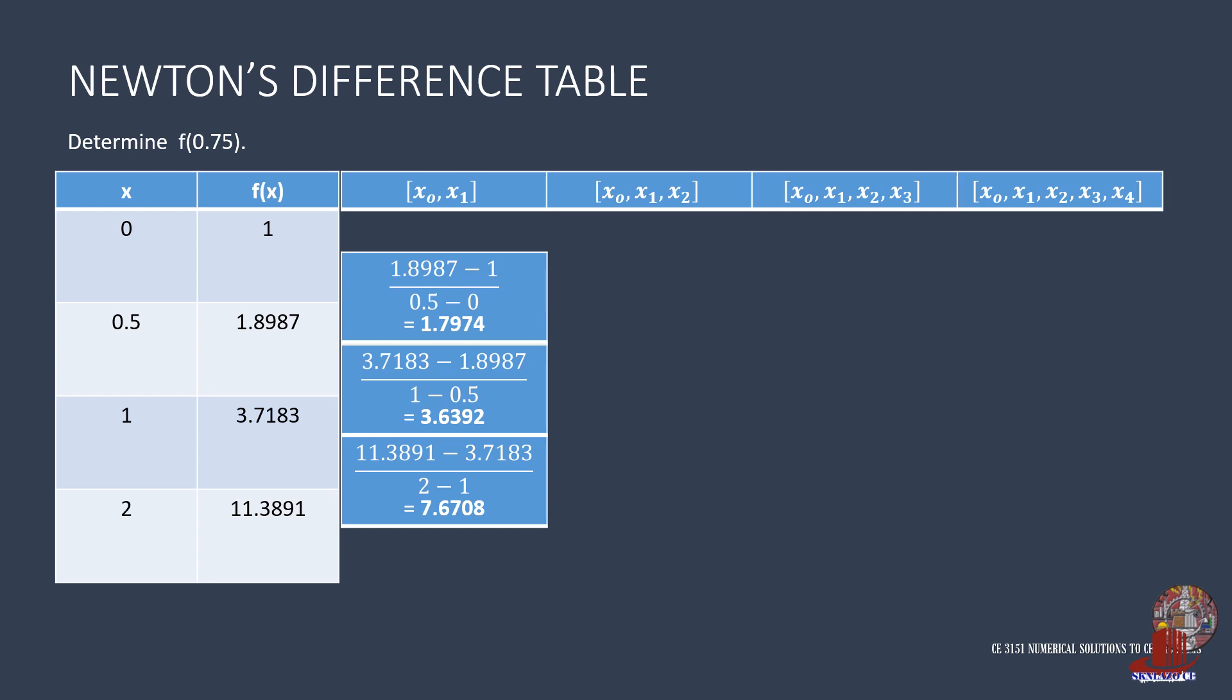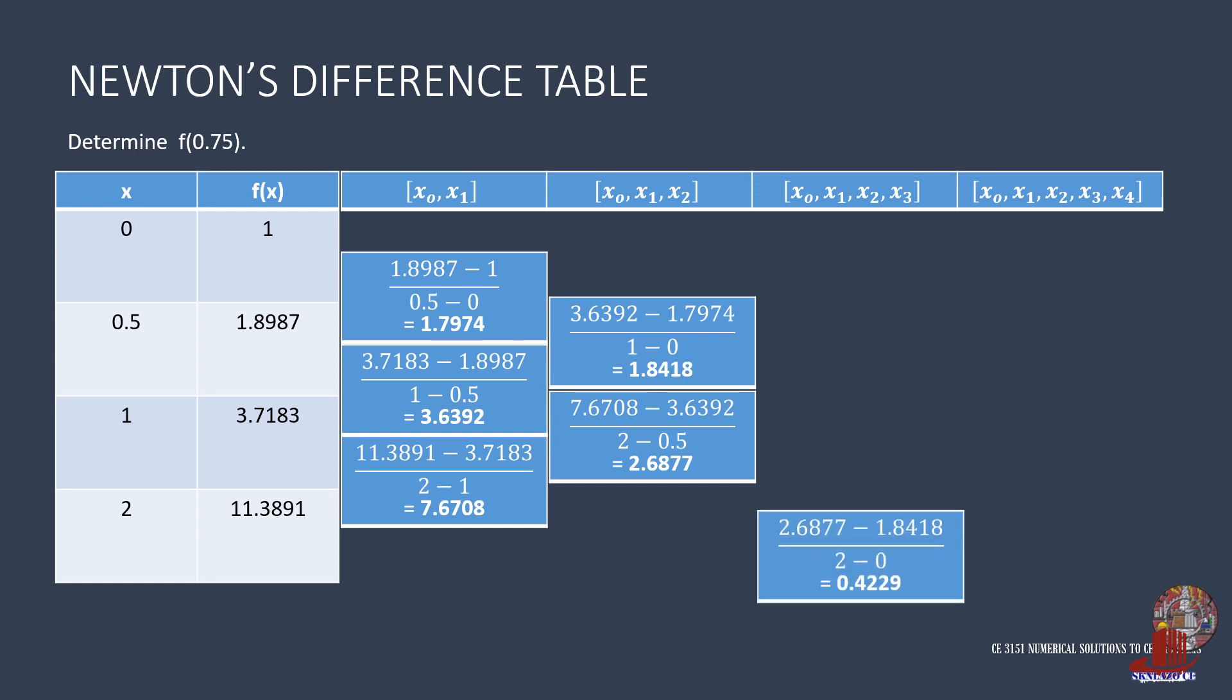For the next column, the top coefficient is computed from 3.6392 minus 1.7974 over 1 minus 0. This is followed by 7.6708 minus 3.6392 all over 2 minus 0.5. The last column has 2.6877 minus 1.8418 divided by 2 minus 0.